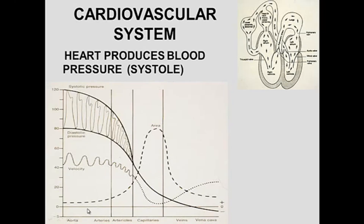Looking at the different vessels, you have the aorta, arteries, arterioles, capillaries, venules, veins, and the vena cava. Coming from the heart you have pressure expanding as a pulse, and there is pulse all the way until you get to arterioles. Arterioles prevent the subsequent pulse — the blood flows but it doesn't pulse anymore at the arterioles.